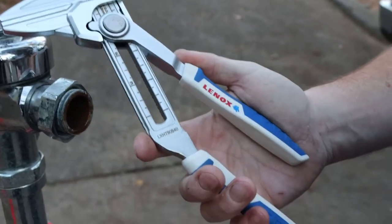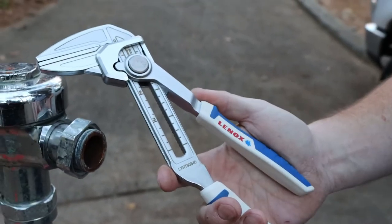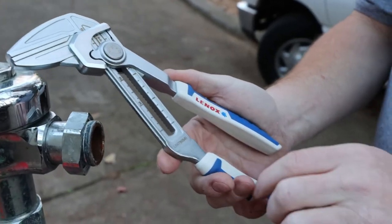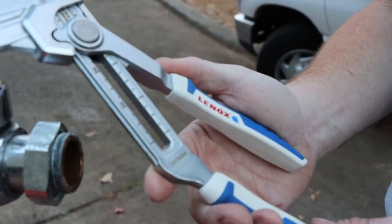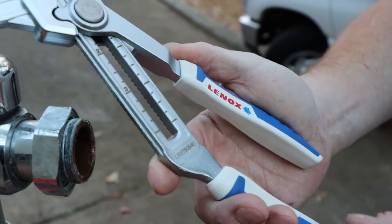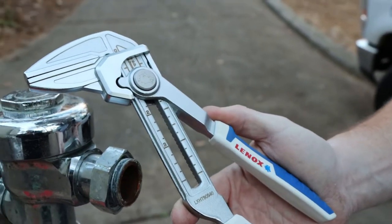Alright guys, picked up this new set of pliers. It's called a pliers wrench from Lennox. Pretty cool setup, model number LXHT90540—holy moly, that's a mouthful. But I'll put that down there in the comments for you guys who want to know.